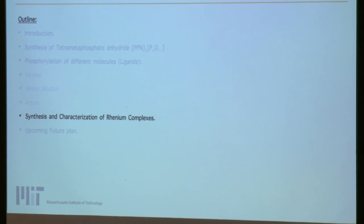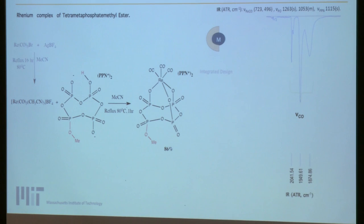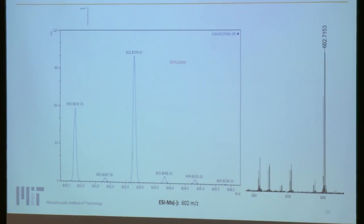Synthesis and characterization of rhenium complexes based on integrated design: we react tetramethaphosphate amidate in methyl ester with tricarbonyl rhenium precursor in acetonitrile yielding a complex. The IR spectrum shows three vibrational stretching of carbonyl bands. The mass spectrum of the complex shows the molecular ion at 602.